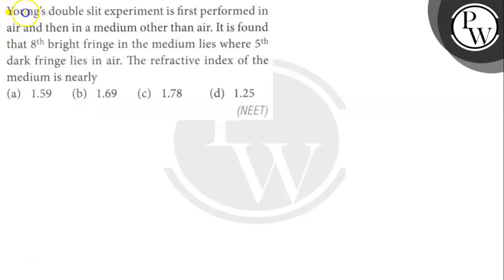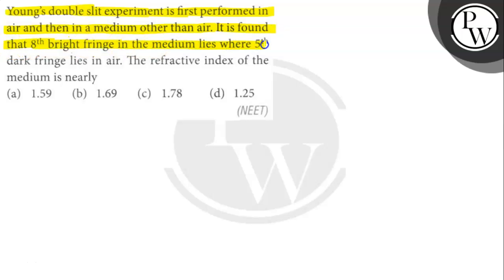Let's read the question. The question says: Young's double slit experiment is first performed in air and then in a medium other than air. It is found that the 8th bright fringe in the medium lies where the 5th dark fringe lies in air. The refractive index of the medium is nearly what?